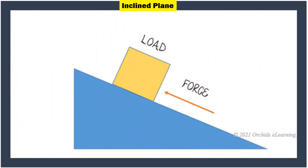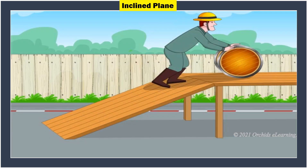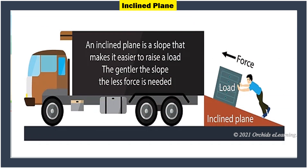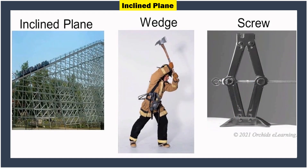Inclined plane: An inclined plane is a sloping surface that is used to push or pull heavy objects to a certain height. A simple smooth board placed at an angle can be used as an inclined plane. You must have seen heavy cartons being loaded onto a truck by pushing them up an inclined board. Screws and wedges are two types of inclined planes.